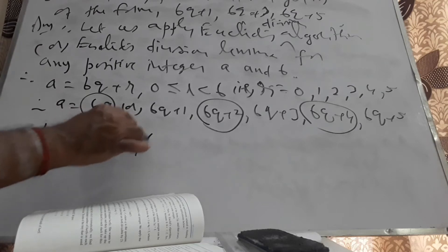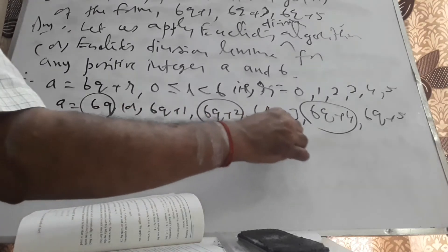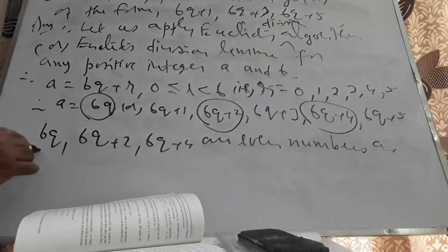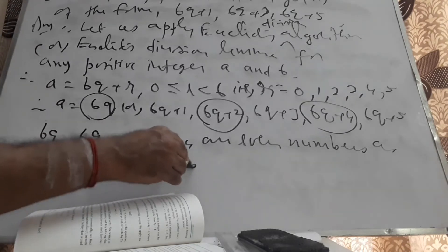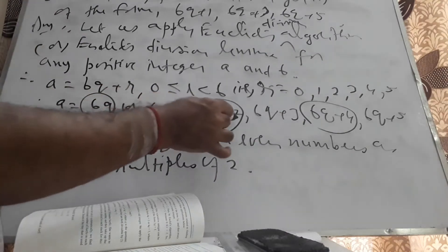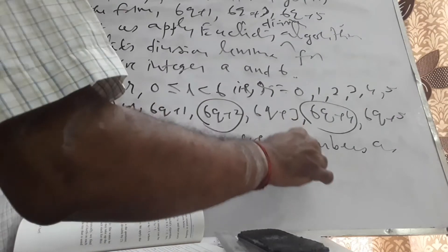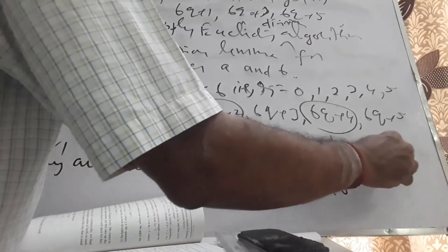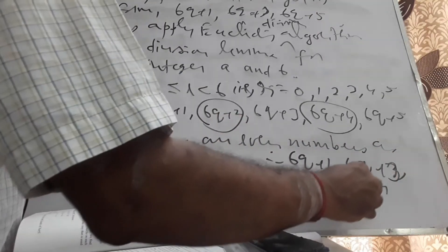6Q, 6Q+2, and 6Q+4 are even numbers, as they are multiples of 2. This can be written as 2 into 3Q, 2 into (3Q+1), and 2 into (3Q+2). Therefore 6Q+1, 6Q+3, and 6Q+5 are odd numbers.